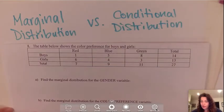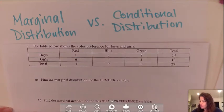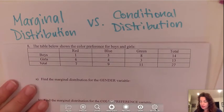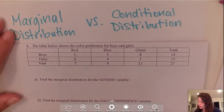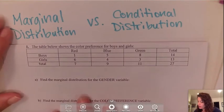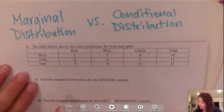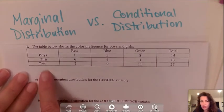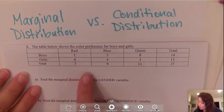In this video I'm going to talk about the difference between marginal distribution versus conditional distribution. You can see we have a two-way table here, a frequency table, and the first thing you want to do is examine what are your rows and what are your columns.